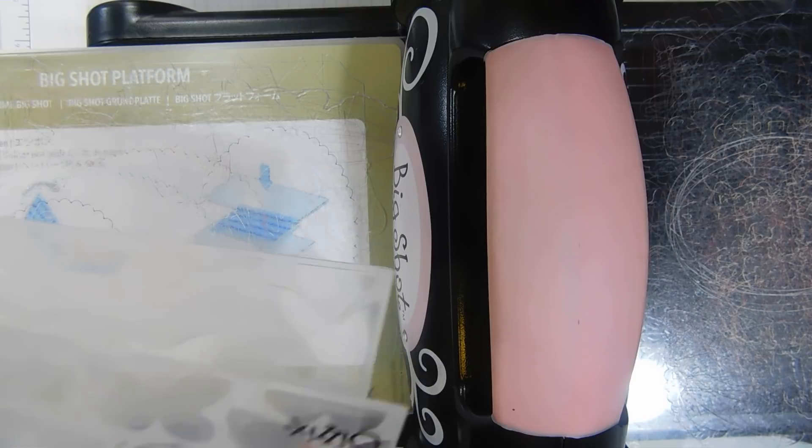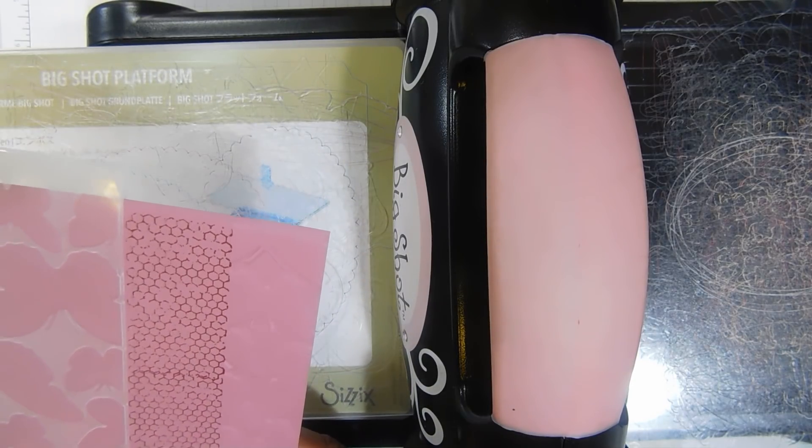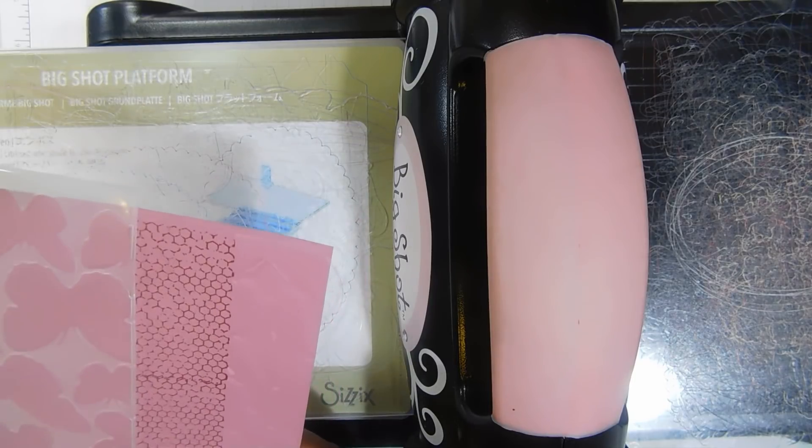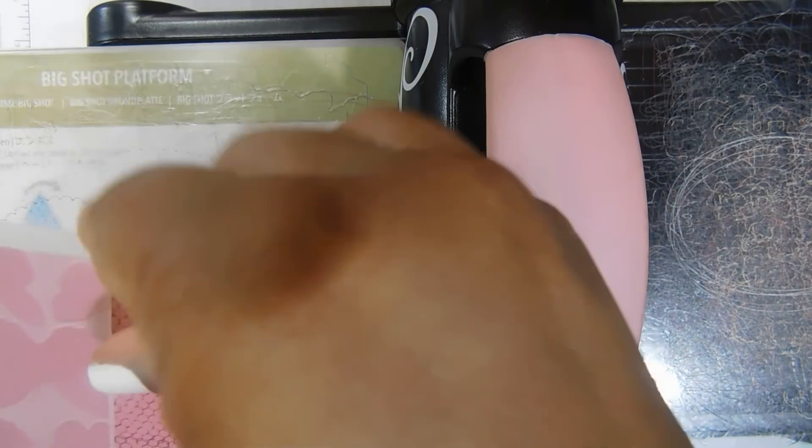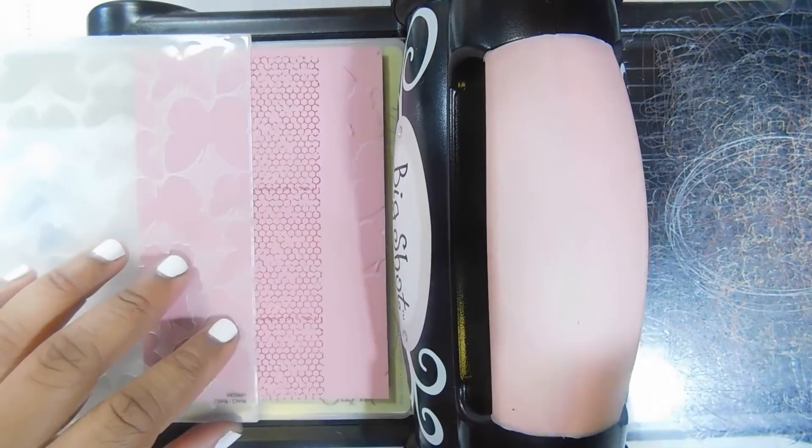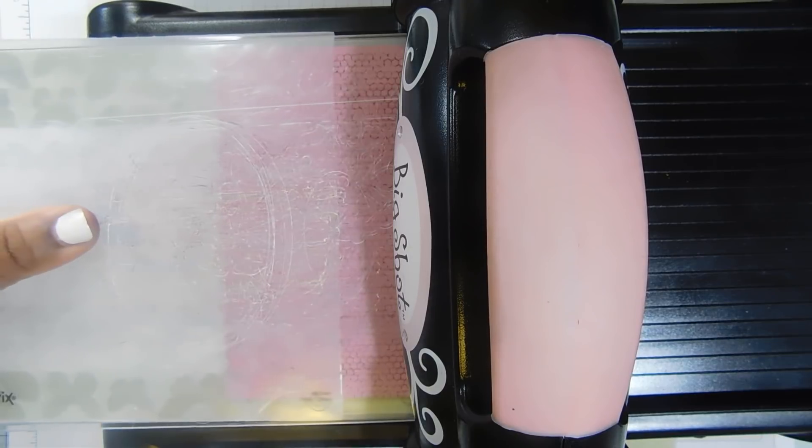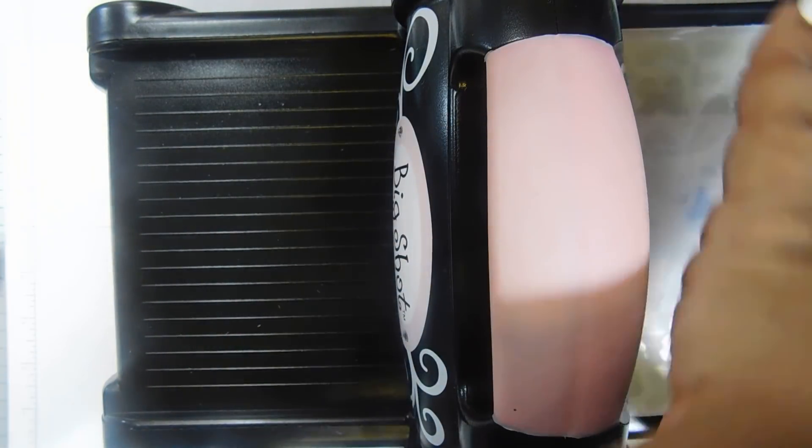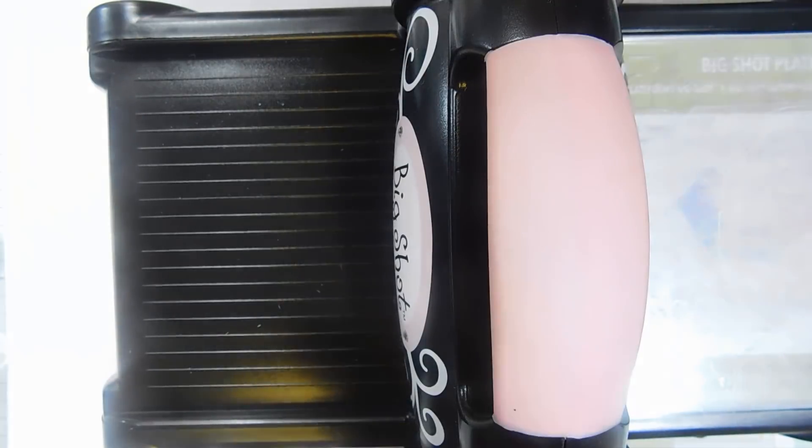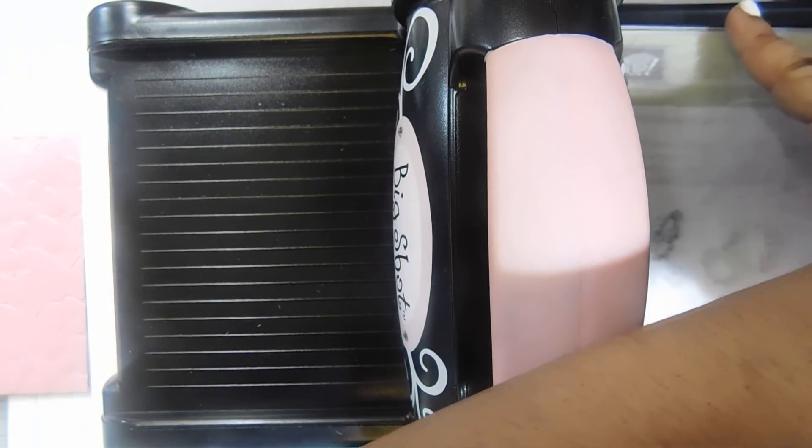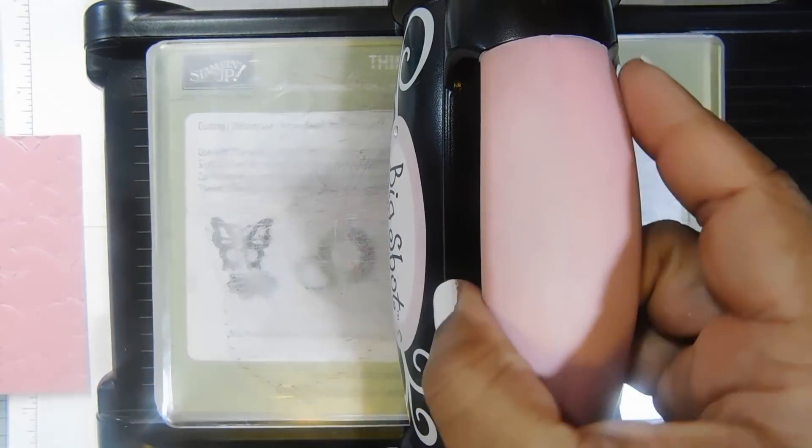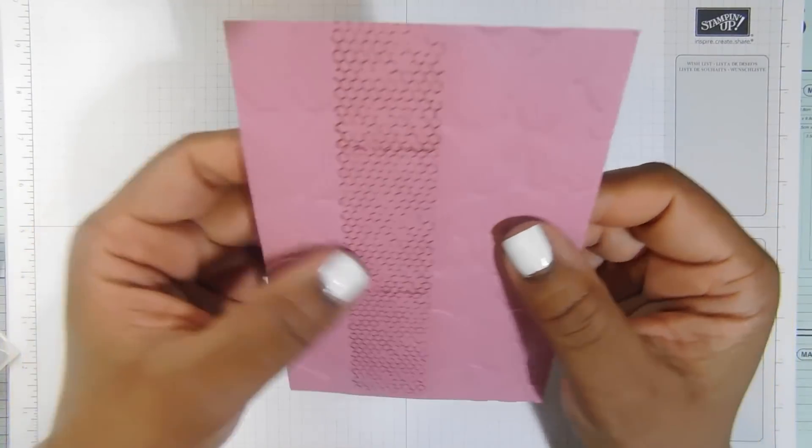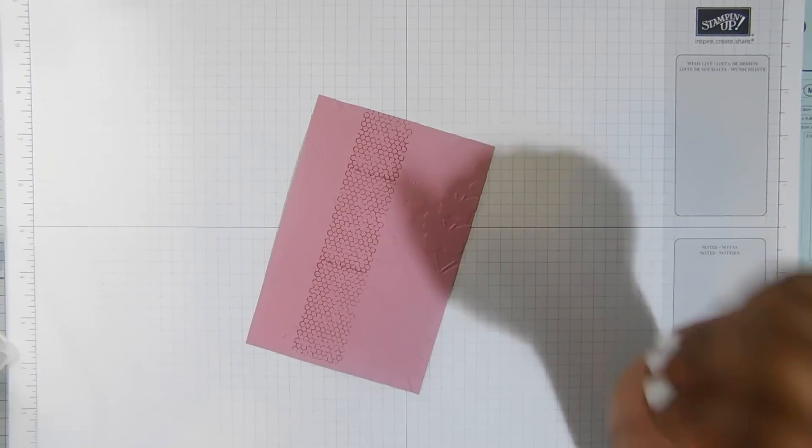Awesome. So we can do the other side now. Just line it up, make sure it's nice and straight, and then run that through. Awesome. Right, move this big shot out of the way and then I can show you properly. Gosh, that's heavy. There we go. So you can see it's just embossed either side of our stamping. Yay, it worked!